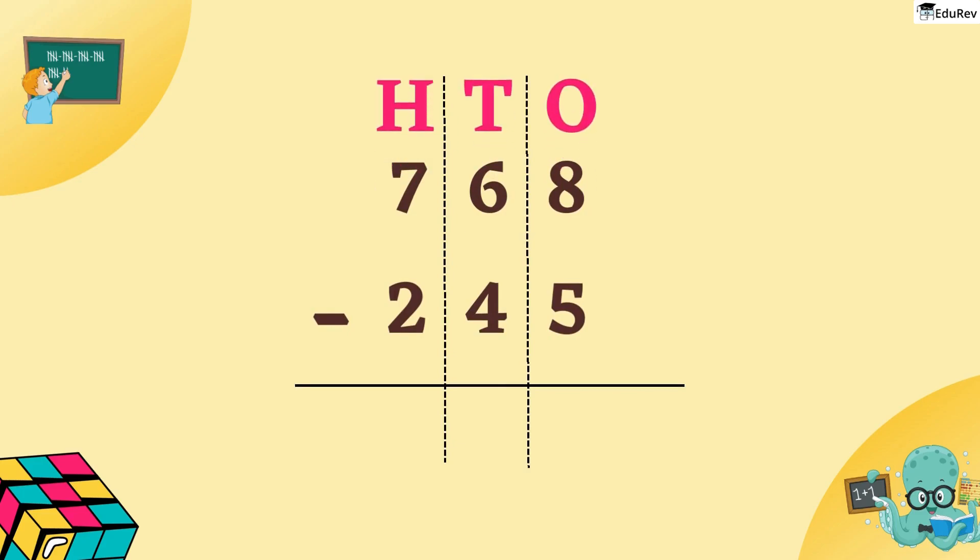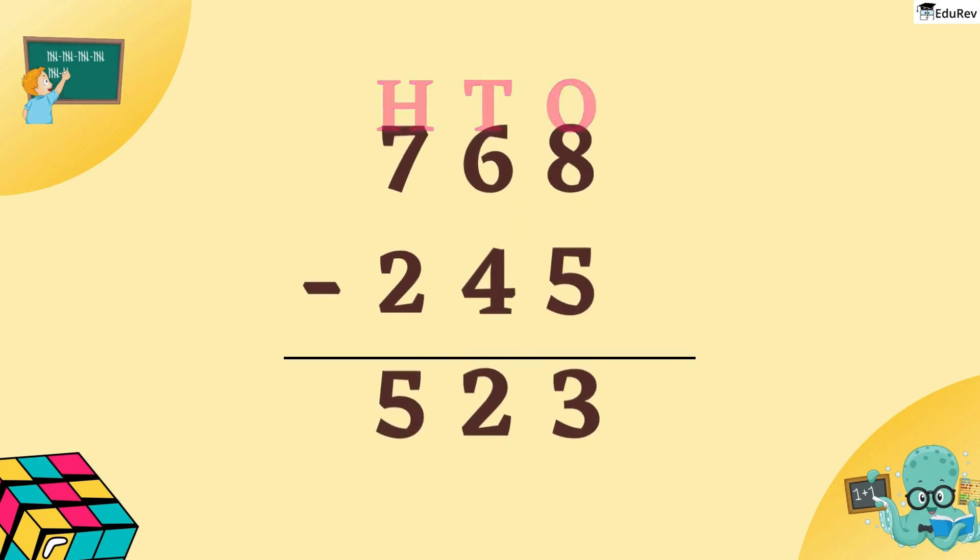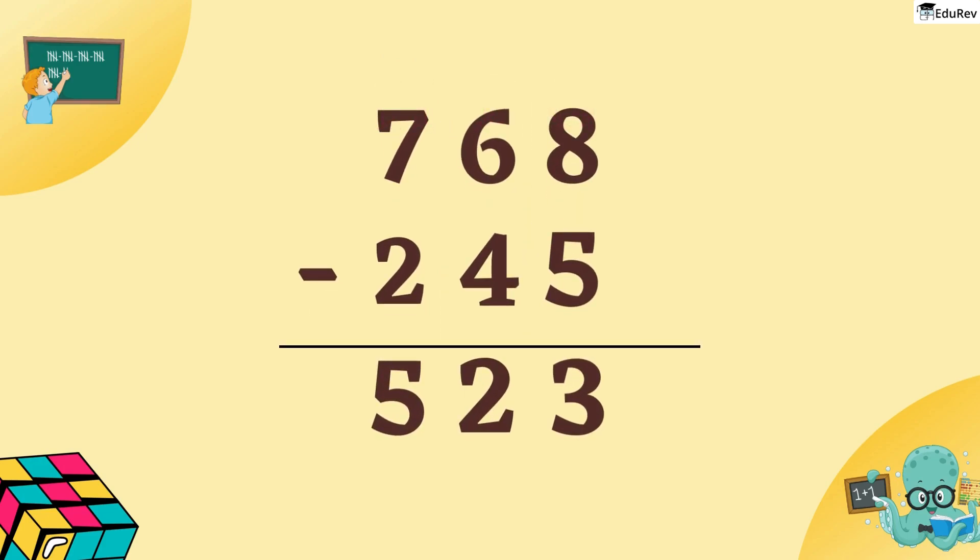We start with subtracting the digits at 1s place. 8 minus 5 is equal to 3. Next, subtract the digits at 10s place. 6 minus 4 is equal to 2. So, our answer is 523.